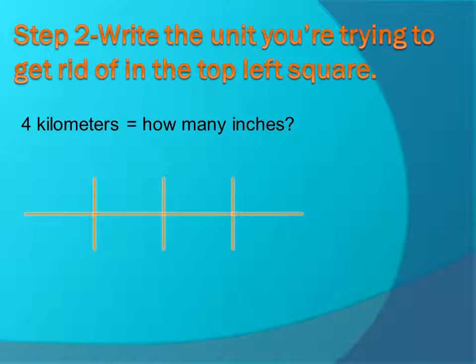You just start off by drawing a grid, and then the second step, you're going to write the unit you're trying to get rid of on the top left square. What unit are we trying to get rid of, and what unit are we trying to get to? We're trying to get rid of 4 kilometers, and we're trying to go to inches. So we're going to put 4 kilometers on the top left square.